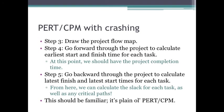The next few steps should be very familiar. Step three: draw the project flow map. Step four: go forward through the project to calculate the earliest start and finish time for each task — at this point you should have your project completion time. Step five: go backward through the project to calculate the latest finish and latest start for each task. These are plain old PERT/CPM steps we've been doing since the beginning of the chapter — early start and finish, latest finish and start, the critical path, the slack, and the project completion time.